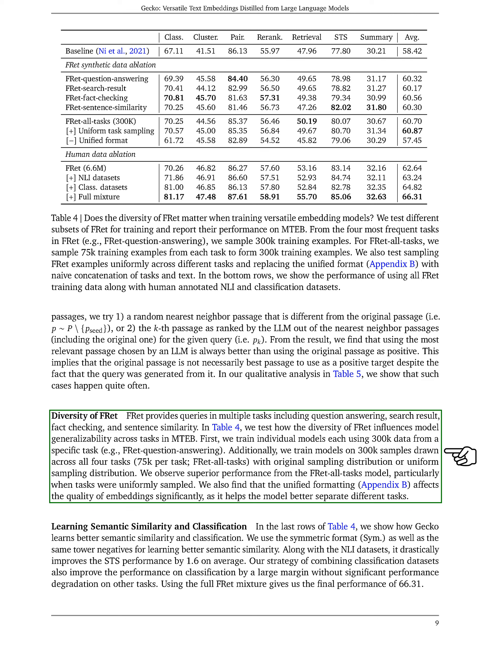Our findings show that the FRET all-tasks model performed better, especially when tasks were uniformly sampled. We also discovered that having a unified format significantly influences the quality of embeddings, helping the model distinguish between different tasks more effectively. By using the symmetric format and same-tower negatives to enhance semantic similarity learning, along with NLI datasets, we achieved a notable 1.6 improvement on average in STS performance. Our approach of combining classification datasets also led to a substantial performance boost in classification without causing significant performance decline in other tasks. By utilizing the complete FRET mixture, we achieved a final performance score of 66.31.